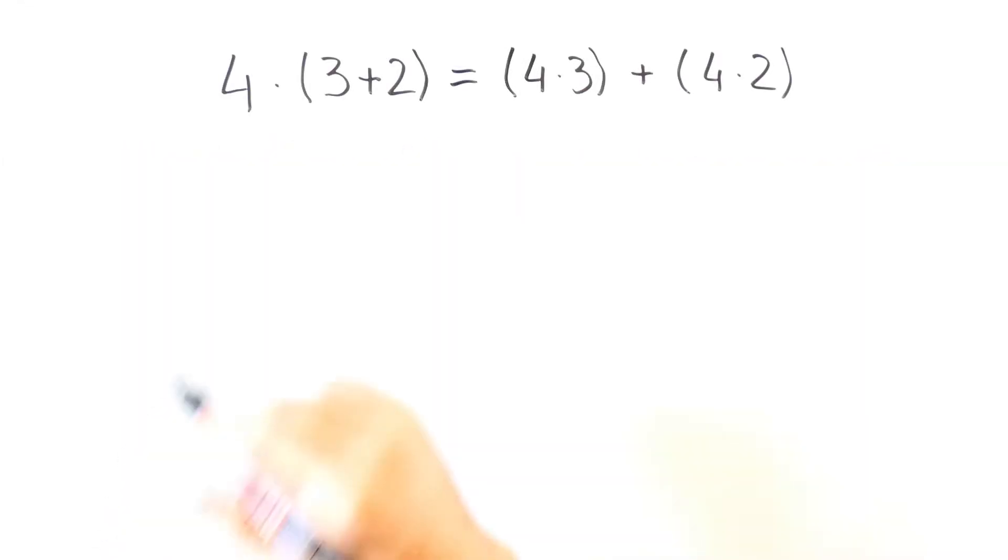Is this equality true? Well, let's calculate. On the left we have 4 times 5 and on the right we have 12 plus 8. Note that on the left we have multiplication and on the right we have addition. We get 20 is equal to 20.